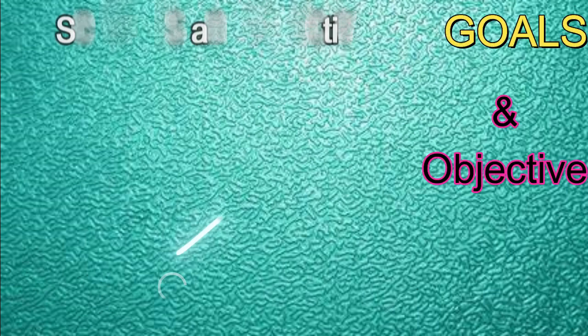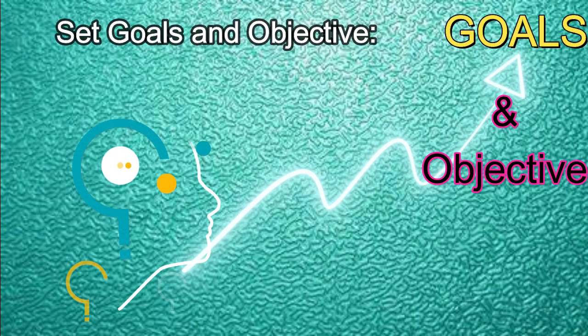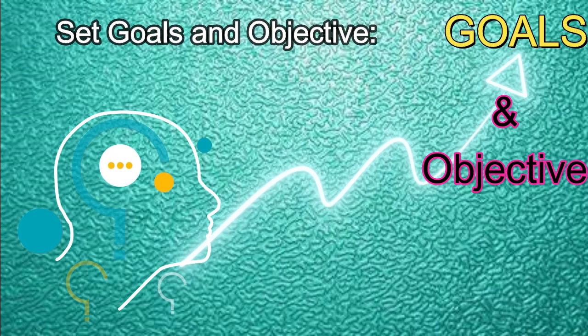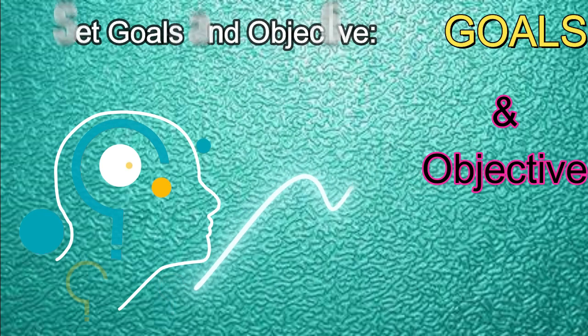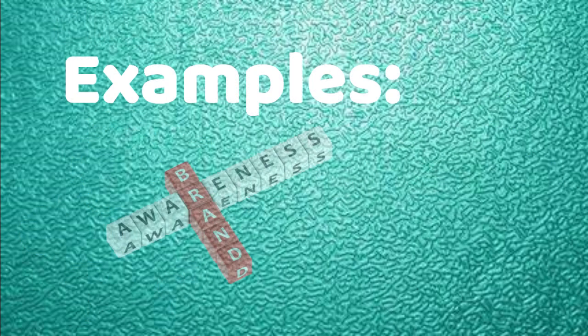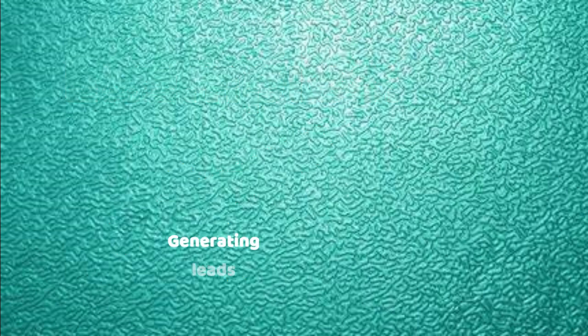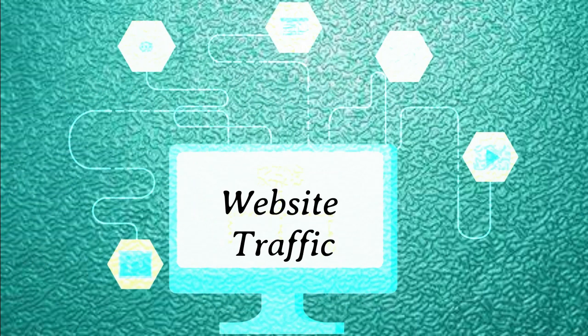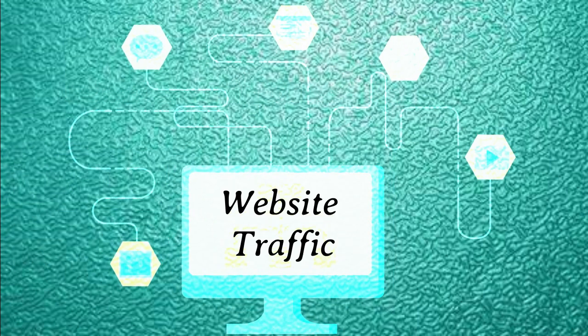Set goals and objectives — what do you want to achieve with your social media marketing? Examples might include increasing brand awareness, generating leads, or driving website traffic.